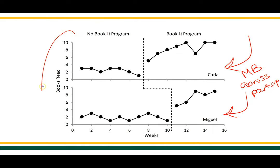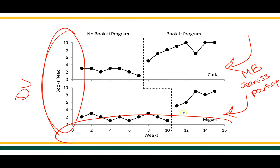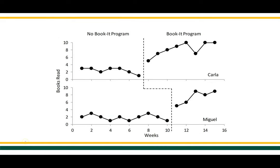The y-axis on the left shows my dependent variable, which is the number of books read. The x-axis on the bottom shows the time measurement — how many books are read per week. Looking at the condition labels, we have one that says 'no' meaning something is not in place: in the left condition we have 'no book it program' and in the right condition we have the 'book it program.'